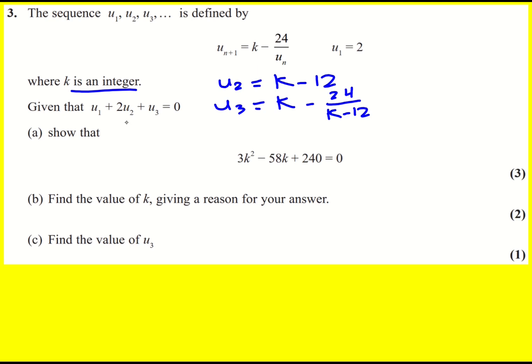Let's substitute that in to here. So 2 plus 2 times k minus 12 plus k minus 24 over k minus 12 must equal 0.